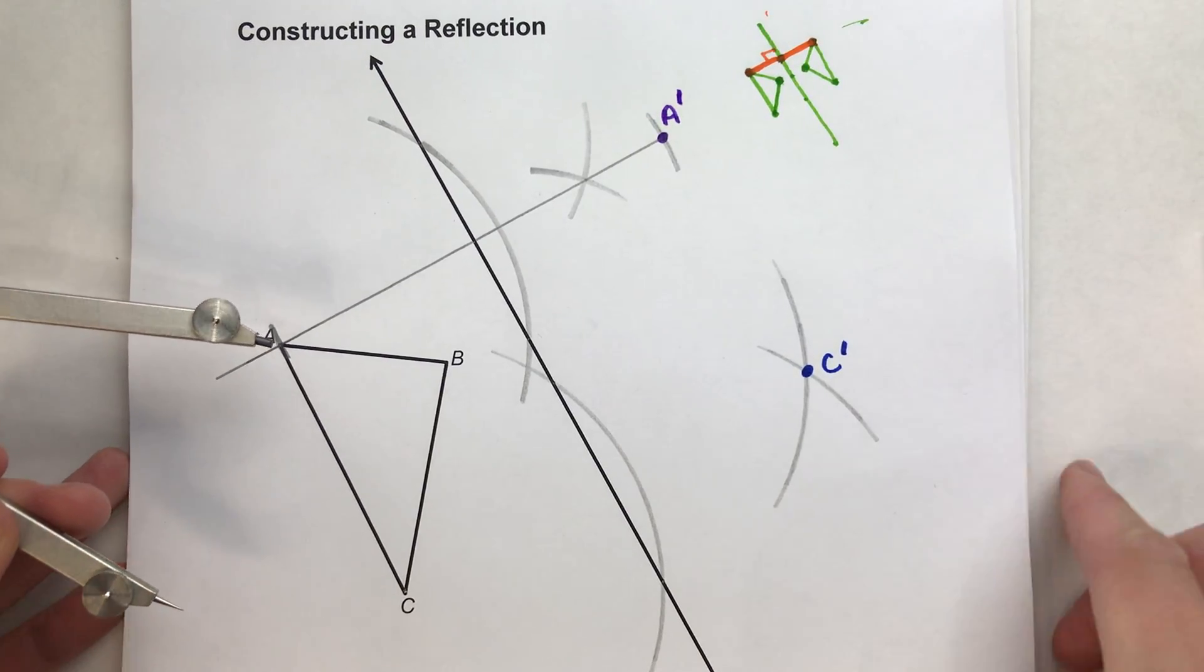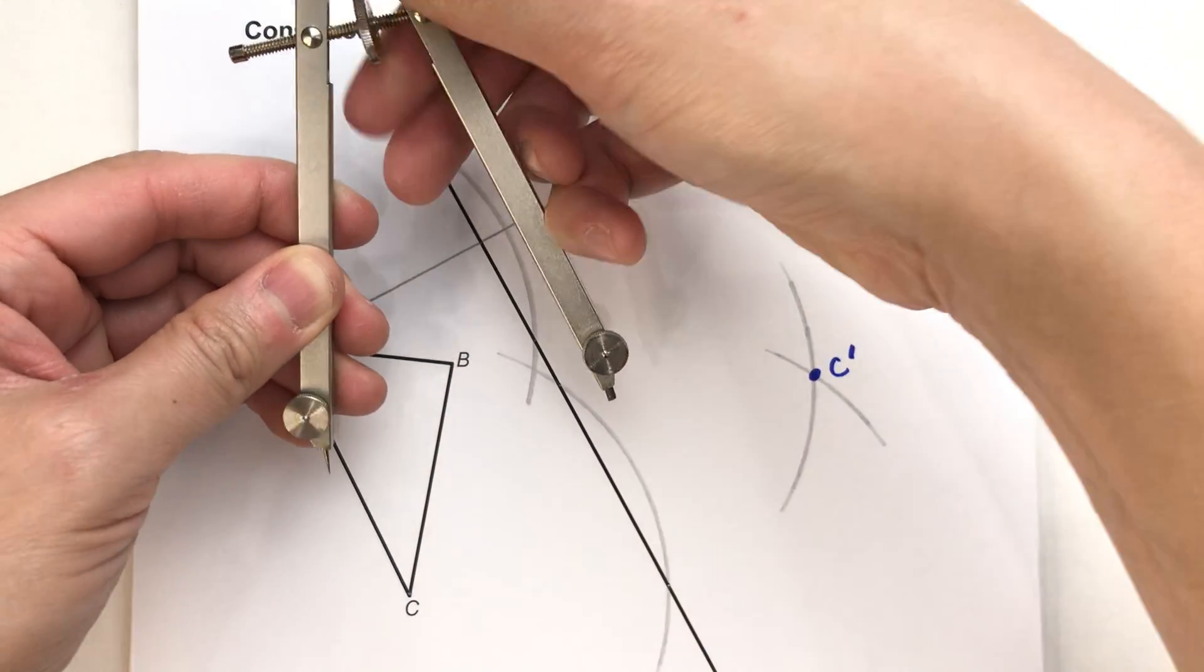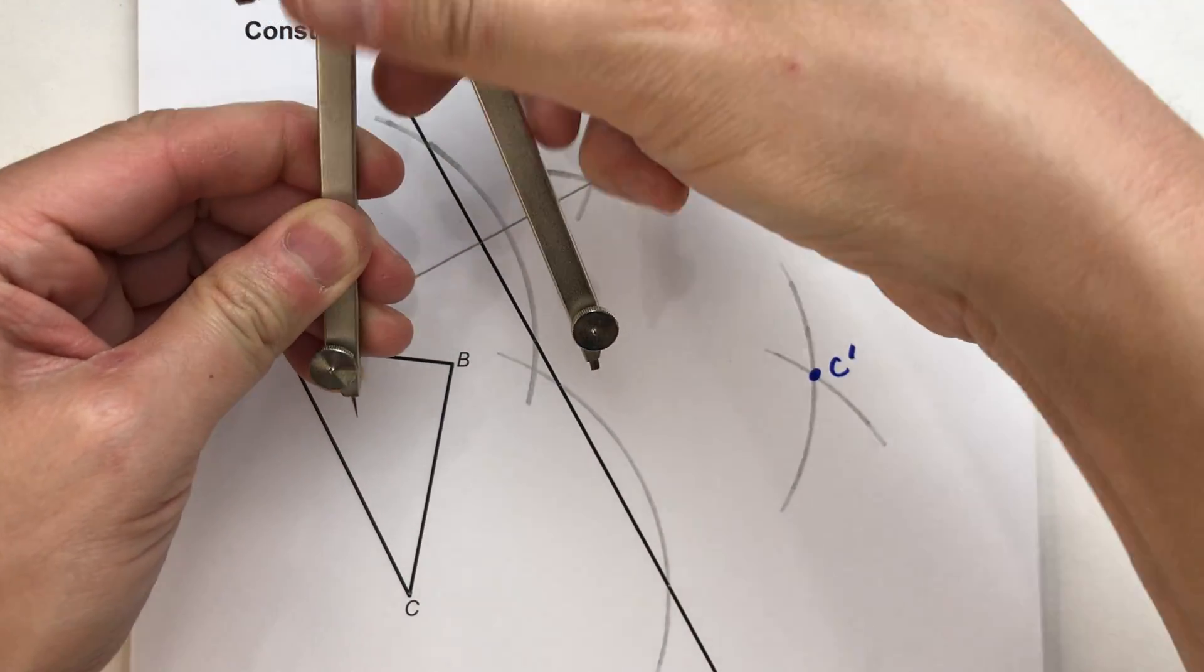So it's a little bit quicker by using this method to do your reflection. Let's finish off B here. And I'll use that same quick method.